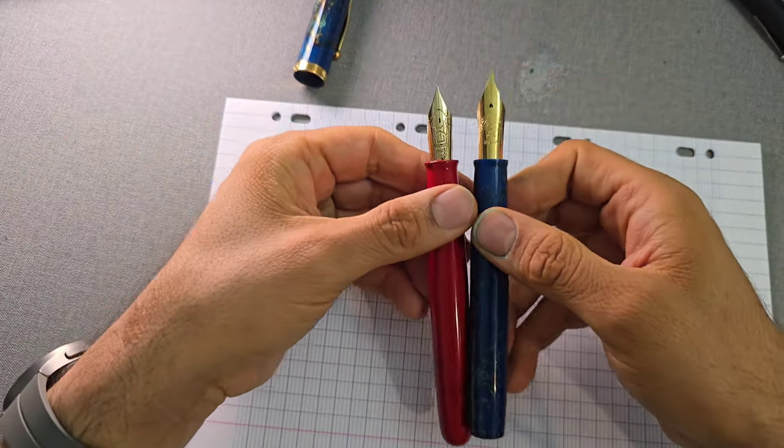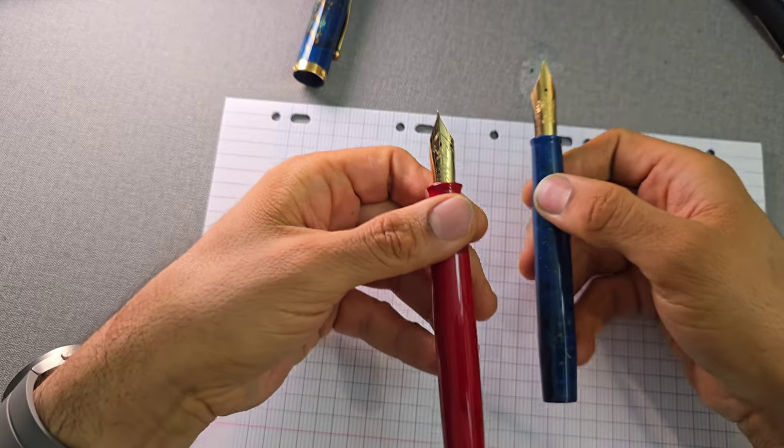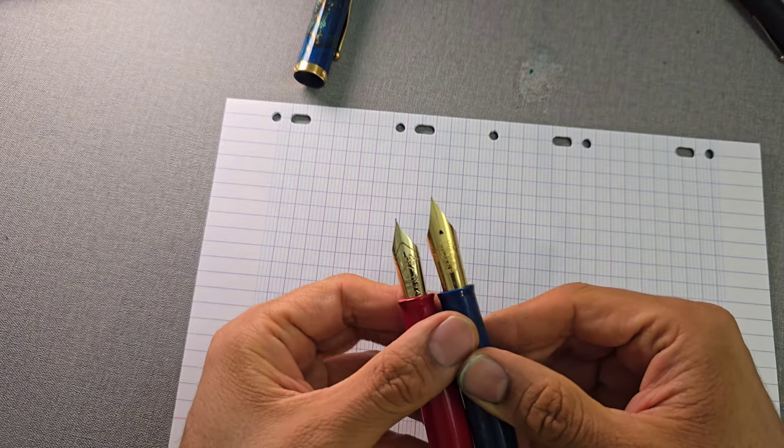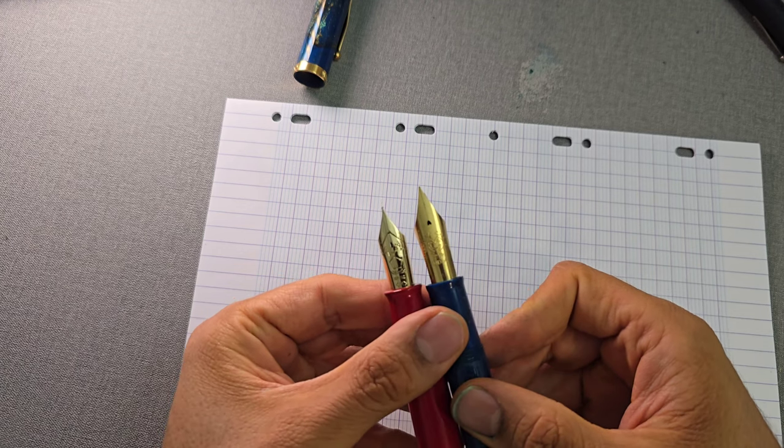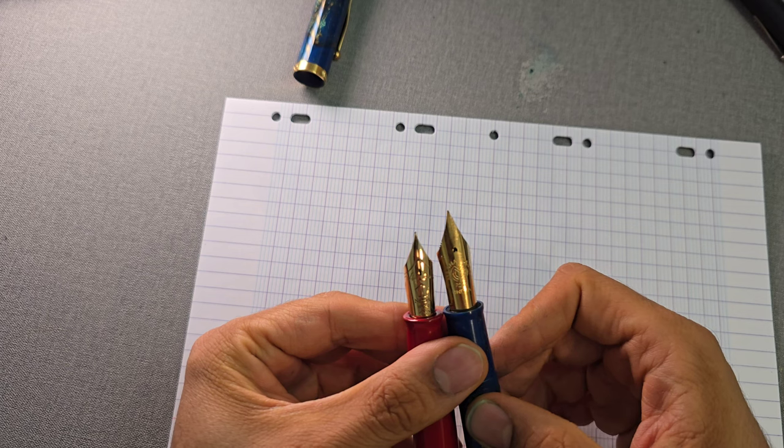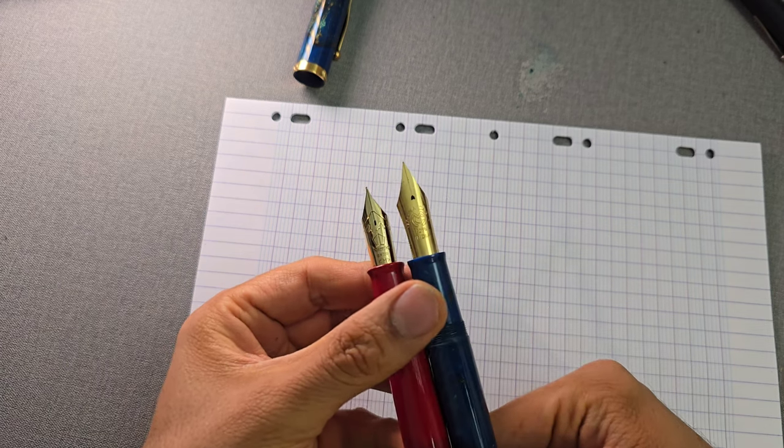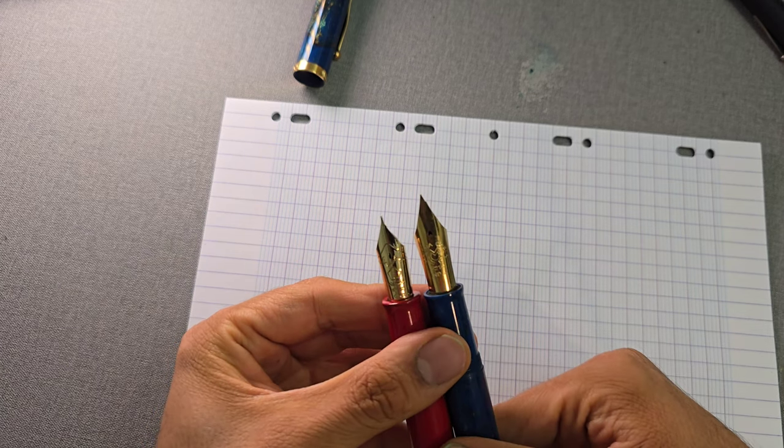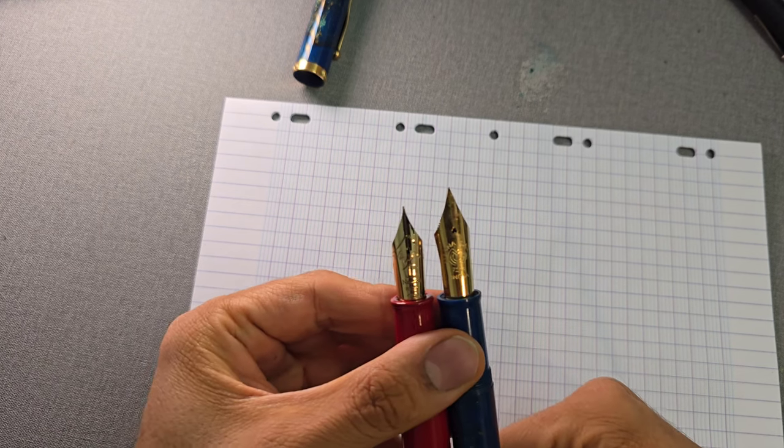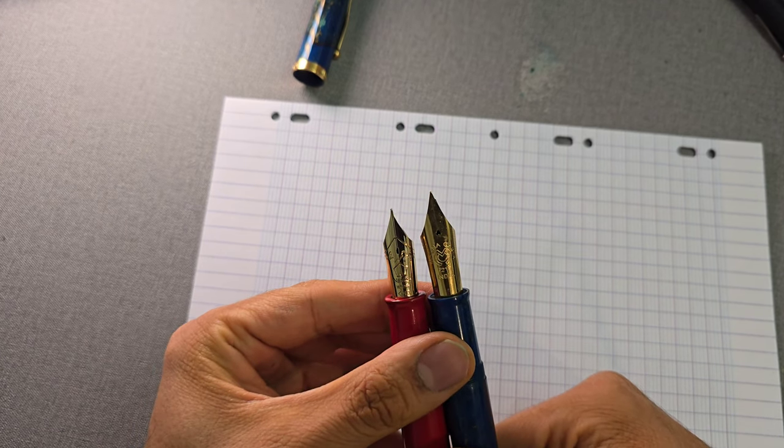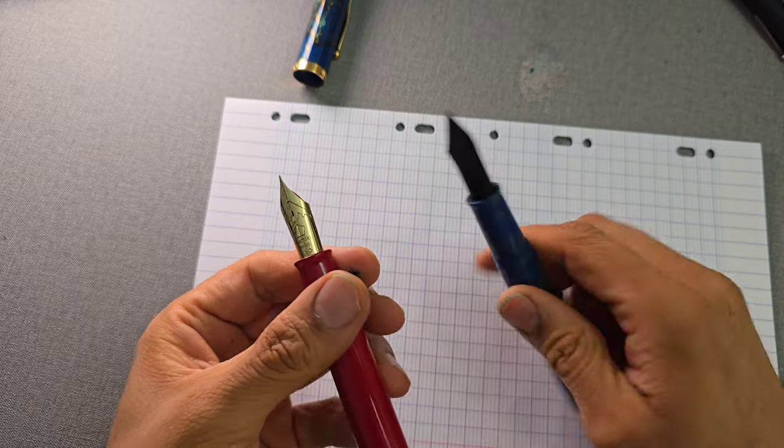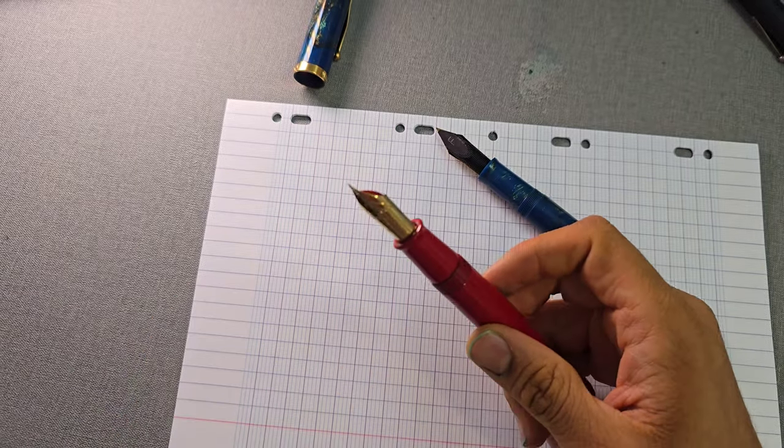That brings us to nib comparison. The number 15 nib on the Miki Emperor is very very easily dwarfed by this number 1000 steel nib on the MagnaCarta. So really this Emperor is feeling very self-conscious about its nib size when standing beside the mag 1000. Now, does the larger nib mean it's better? That remains to be seen.